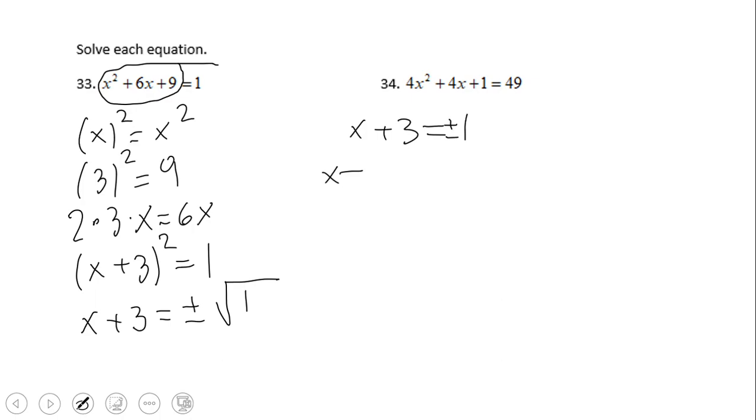And obviously we have two equations now, x+3 = 1, and x+3 = -1. And we end up here, x = -2.